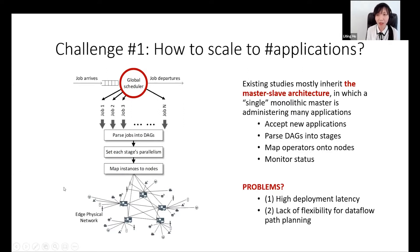The central master manages all applications. The responsibilities include accepting new applications, parsing DAGs into stages, mapping operators onto nodes, and monitoring their status. It may run well in the cloud. However, when it comes to edge environments where there are many concurrent running applications, this centralized architecture may easily become a scalability bottleneck.